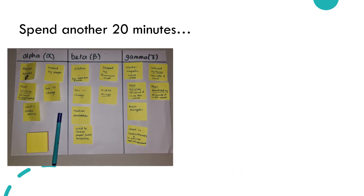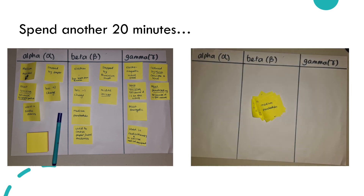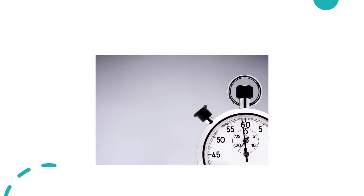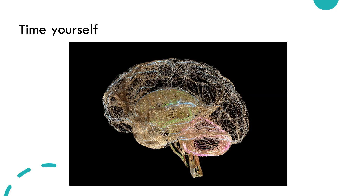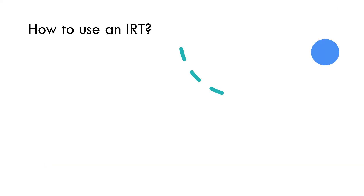Spend another 20 minute revision session trying to put the sticky notes into the right place. Each time, check your answers with the source material, or you can write the answers in pencil on the reverse of the A3 sheet. Time how quickly you have been able to replace the sticky notes correctly, and repeat this during the 20 minute session as many times as you can. The faster you get, the better your memory — you can use a stopwatch to support you with this.